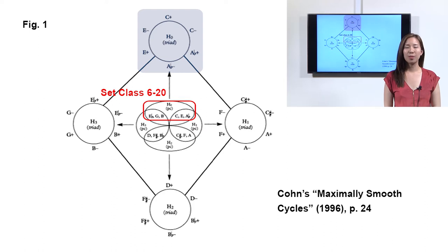Cohn coins the term hexatonic system for the four co-cycles in Figure 1. The total pitch class content of each P-L co-cycle constitutes the set class 6-20. For example, the system at the top, comprising of C major, C minor, A-flat major, A-flat minor, E major and E minor, uses only the six notes of the hexatonic collection C, E-flat, E, G, A-flat and B and their enharmonic equivalents.